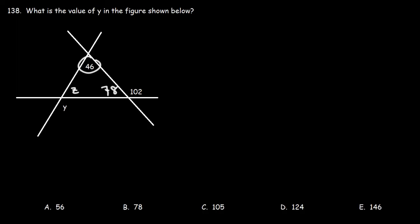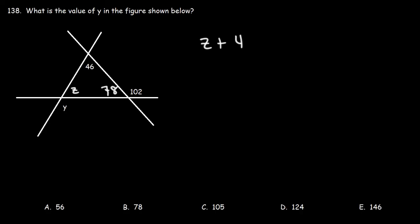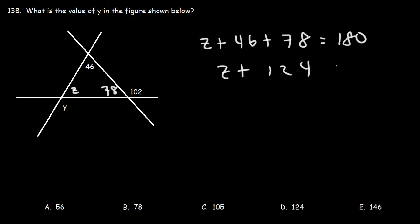Now let's call the third angle in the triangle Z. The three angles in a triangle must add up to 180, so Z plus 46 plus 78 equals 180. Since 46 plus 78 is 124, Z equals 180 minus 124, which is 56.